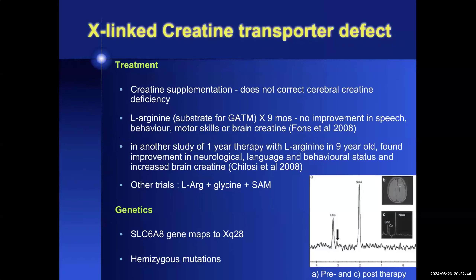Treatment for the creatine transporter defect includes creatine supplementation, which may not be effective depending on the severity of the transporter defect. A more effective strategy is to promote endogenous creatine biosynthesis in the brain by providing the precursor L-arginine and glycine. In one study, L-arginine for nine months did not show improvement in speech, behavior, motor skills, or brain creatine. However, in a longer study of one year in a nine-year-old, there was demonstrated improvement in neurologic, language, and behavioral status and evidence of increased brain creatine on MRS. It is also recommended to give S-adenosylmethionine, which combines with guanidinoacetic acid to make creatine through GAMT.